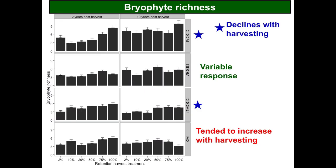In terms of bryophyte richness at two years and ten years post-harvest, there's some evidence of a decline in richness shortly after harvest and some recovery afterwards, while still continuing to have lower richness in all harvest treatments compared to the control. For the CDOM and DDOM-U that seems to be the pattern. For the deciduous dominated and mixed forests there's a variable response, making it hard to establish a consistent pattern in terms of the influence of harvesting on richness, with some tendency to increase with harvesting.